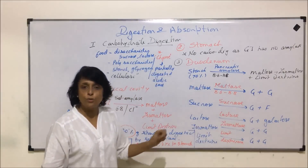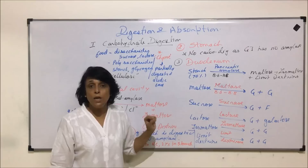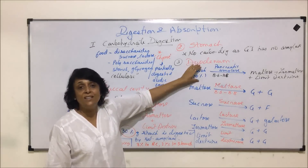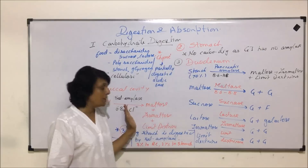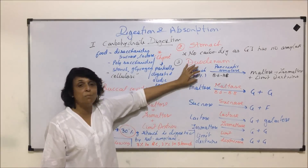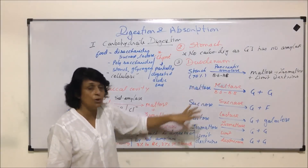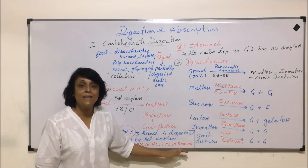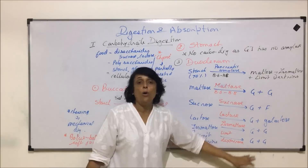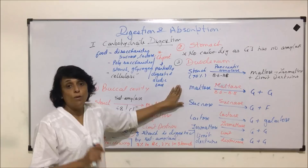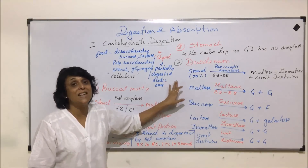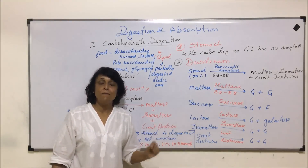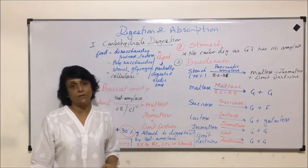The most common monosaccharide obtained is glucose — about 80% of all monosaccharides from this process is glucose, with some fructose and galactose as well. To summarize: 30% of starch got digested earlier, and the remaining 70% entering the duodenum is now fully broken down by all these enzymes into monosaccharides. We have now covered the digestion of starch. In the next part, we will discuss cellulose digestion.